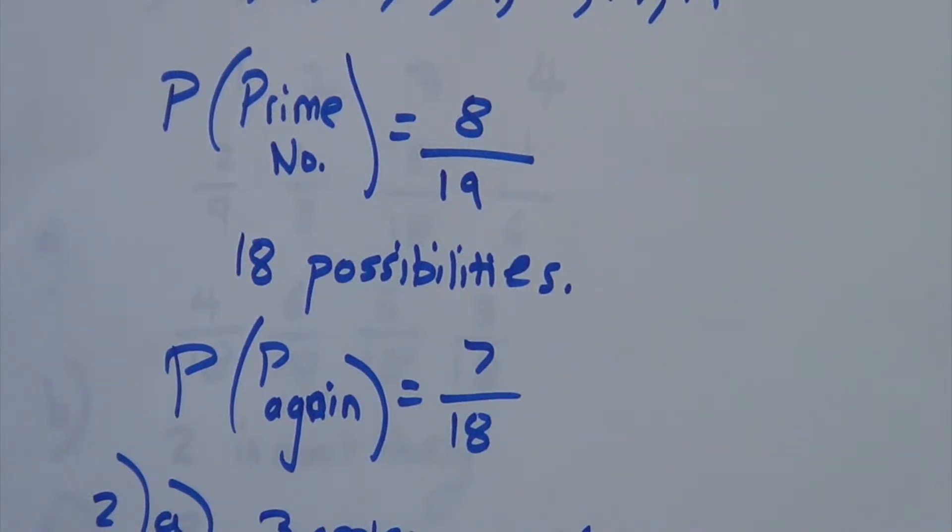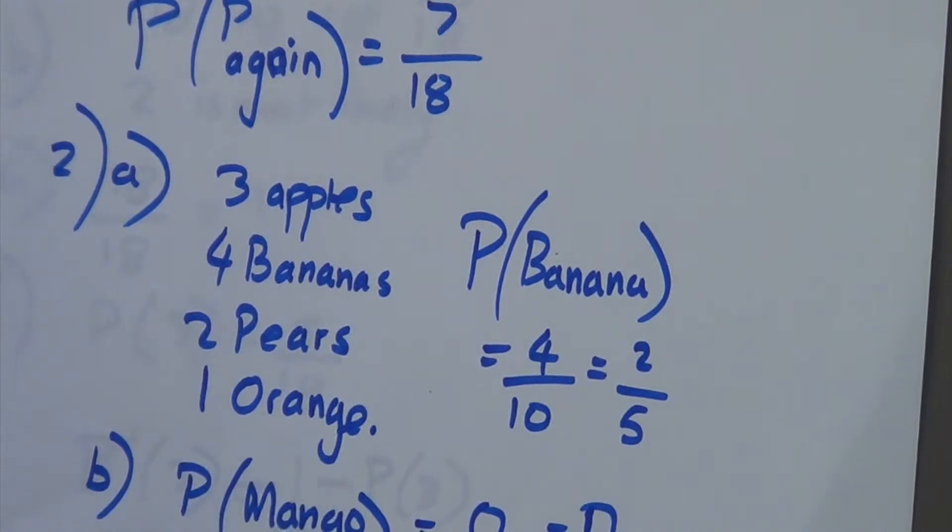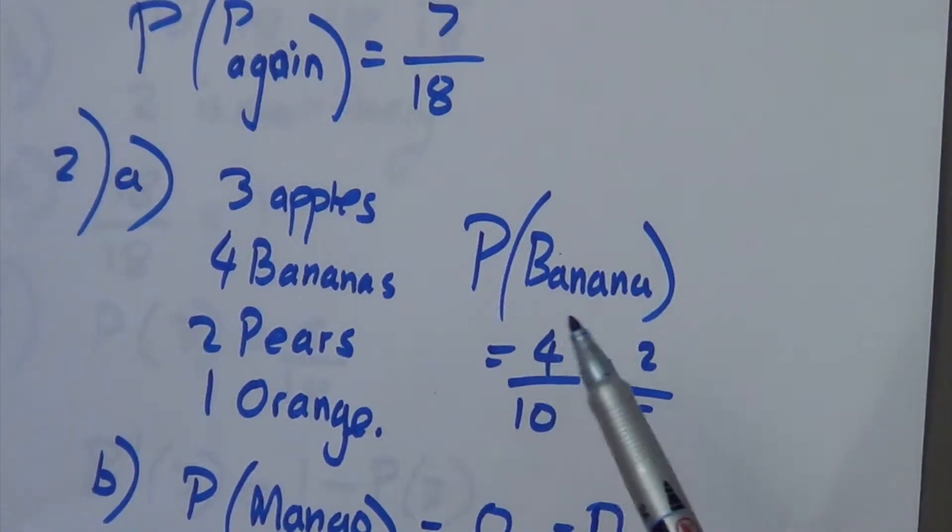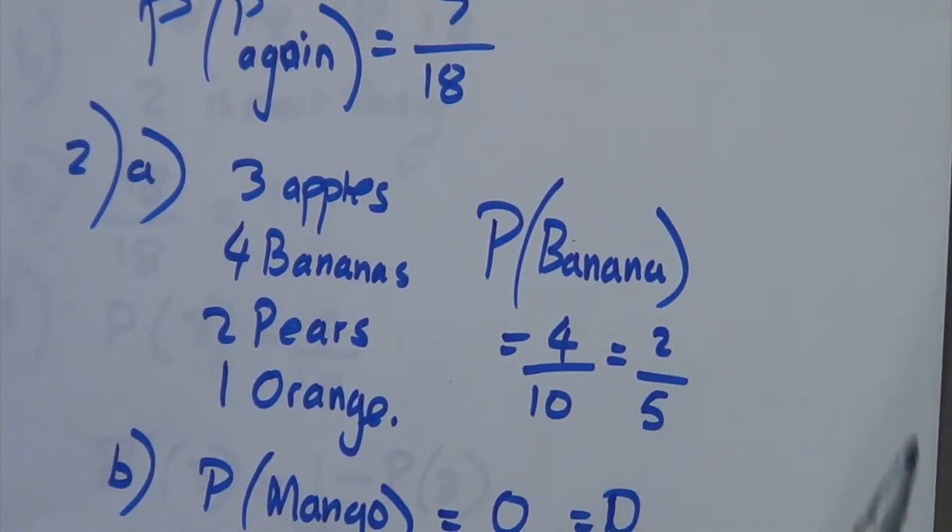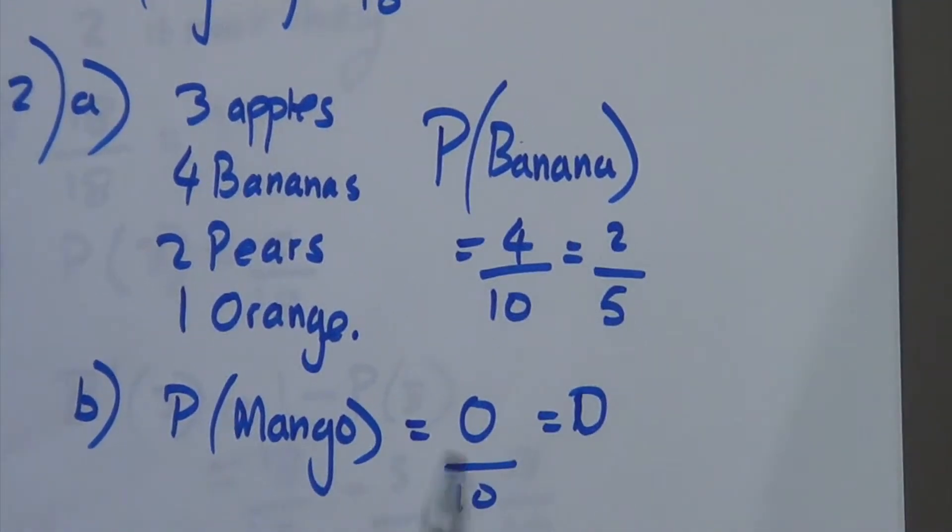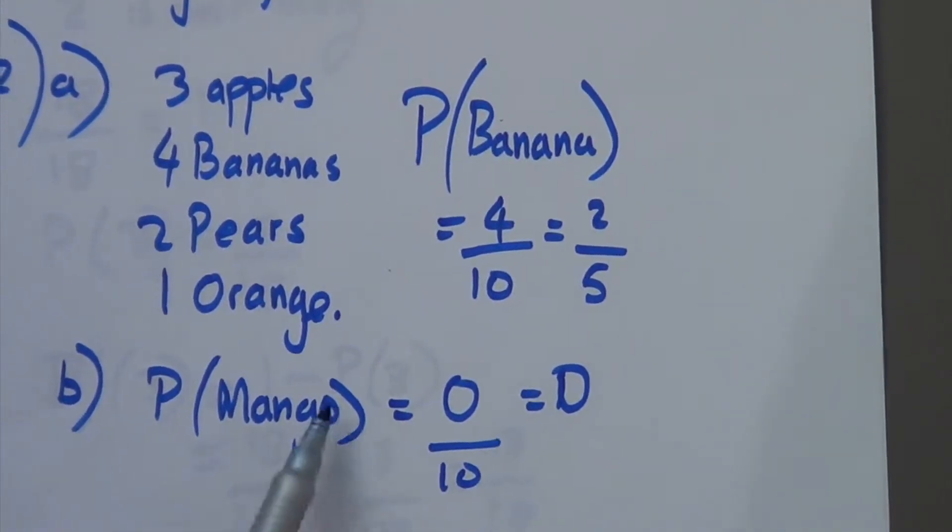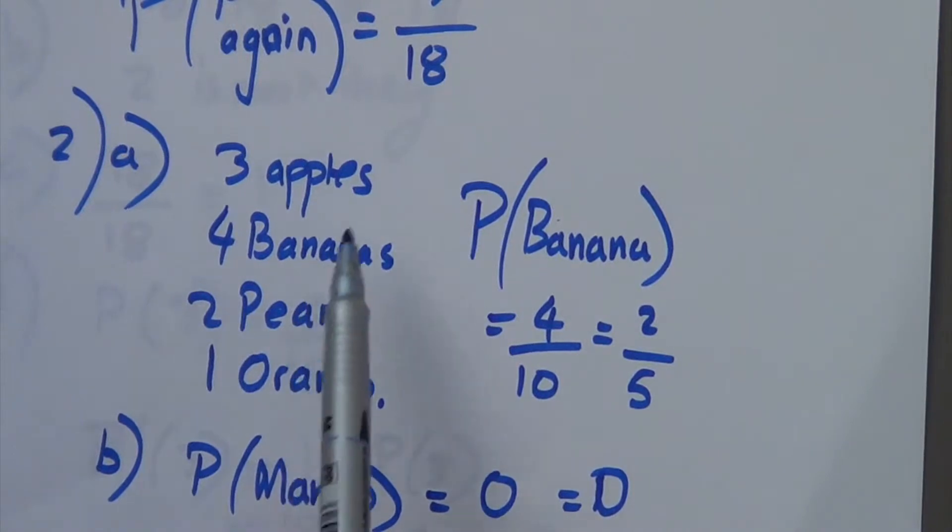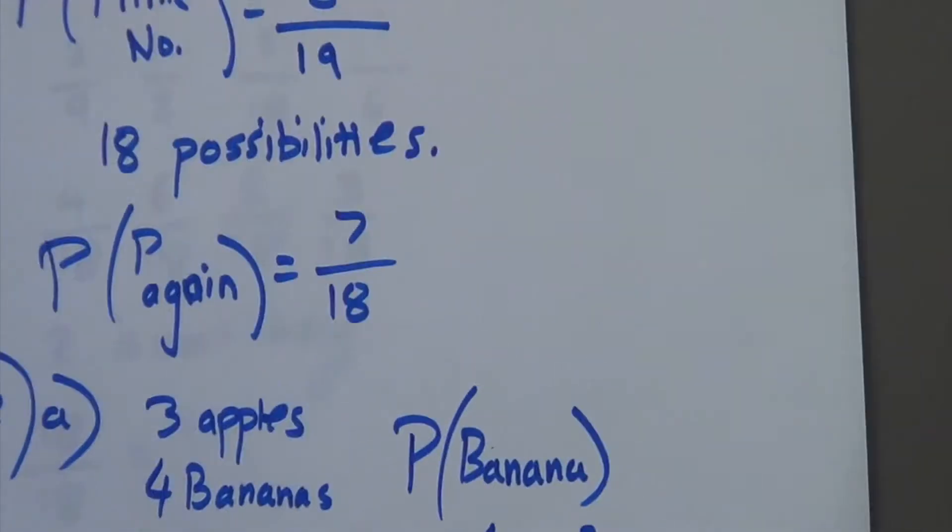Next question, basically, a person has got a bowl of fruits: three apples, four bananas, two pears, and one orange. The probability that a banana is going to be 4 over 10, which is equal to 2 fifths. Then the question asks us, what's the probability that it's going to be a mango? Well, let's have a look at the original list. We can think, oh, well, there's no mangoes there. So, it's going to be 0 out of 10, which is 0.